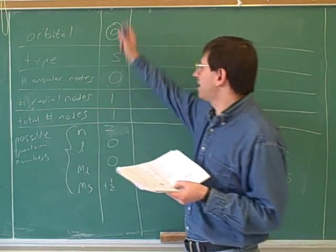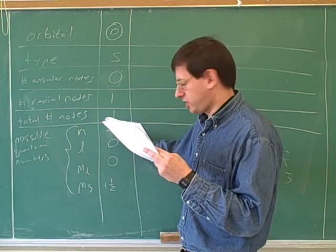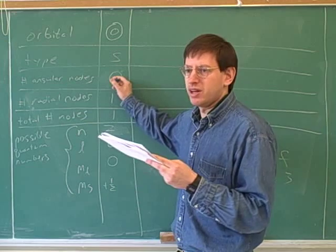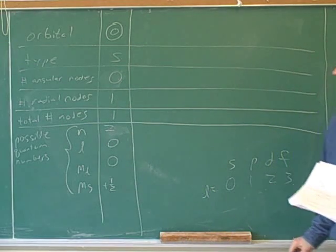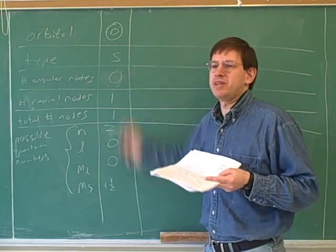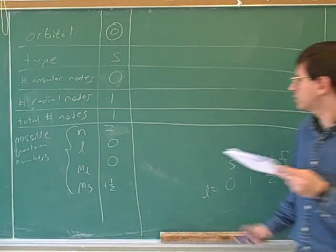Since the total number of nodes has to equal n minus 1, n has to be 2 because 2 minus 1 is 1. And ml is 0. That's right. Because ml goes from negative l to positive l. Well, between negative 0 and positive 0, there's only one number, which is 0. So m sub l has to be 0 here. That's right. So I think we've now worked out everything in this column. That's good. So Roman numeral 1 in this position would have been the number 2. And question Roman numeral 2 over here would have been the number 0.